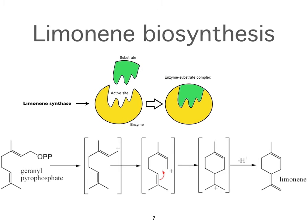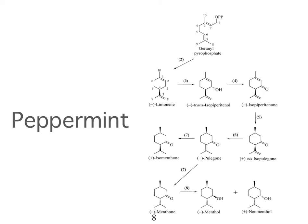Why does nature put so much energy into the creation of these essential molecules? Here's an example of some of the molecules found in peppermint oil and the actual pathways they take. From geranyl pyrophosphate at the top, limonene is created, then through a different enzyme changed into isopiperitol, then isopiperitinone, then isopulegone, then pulegone, then isomenthone. You can't just create isomenthone directly — it has to go through that process. This helps explain why essential oils are so complex.